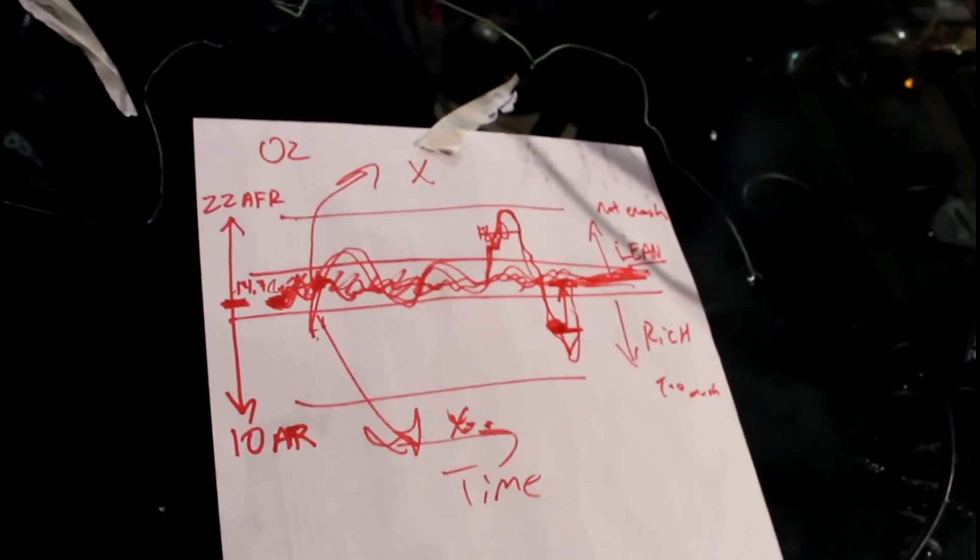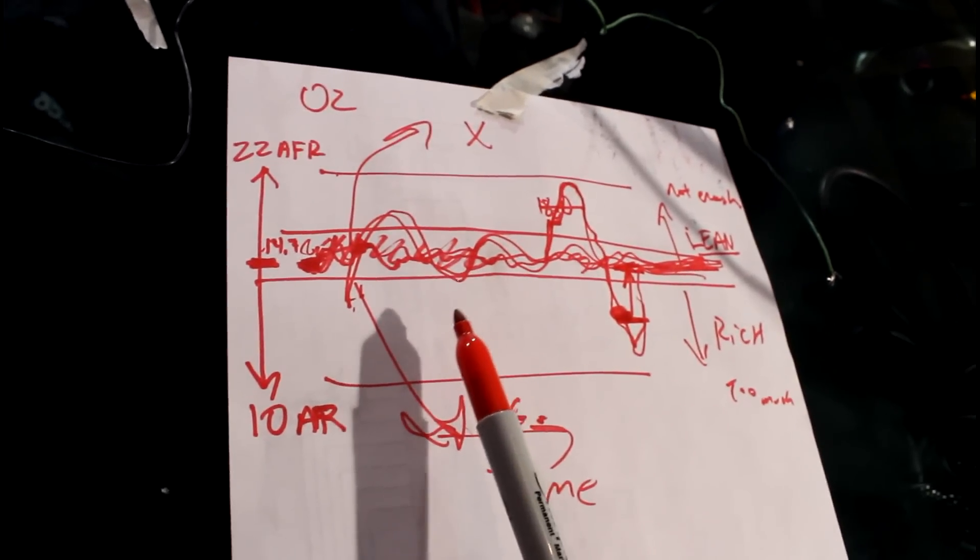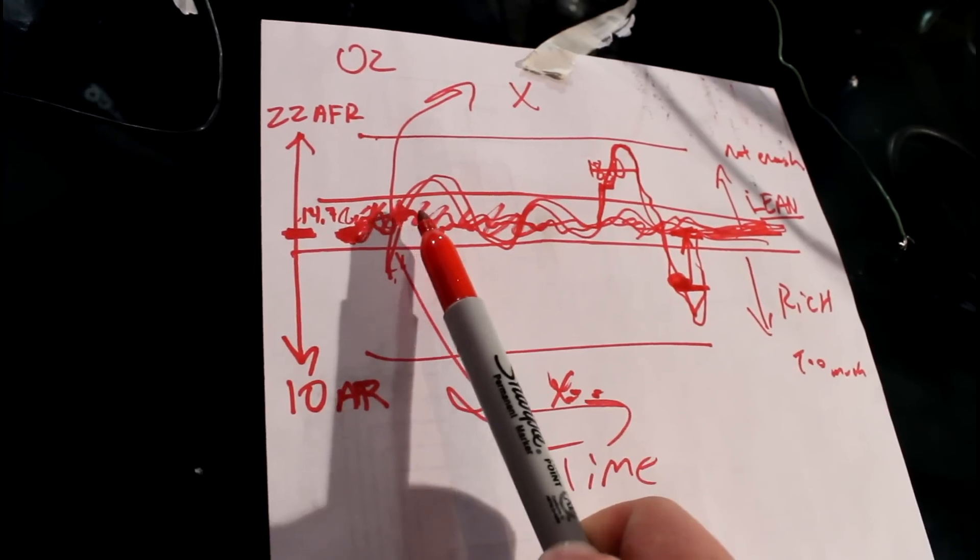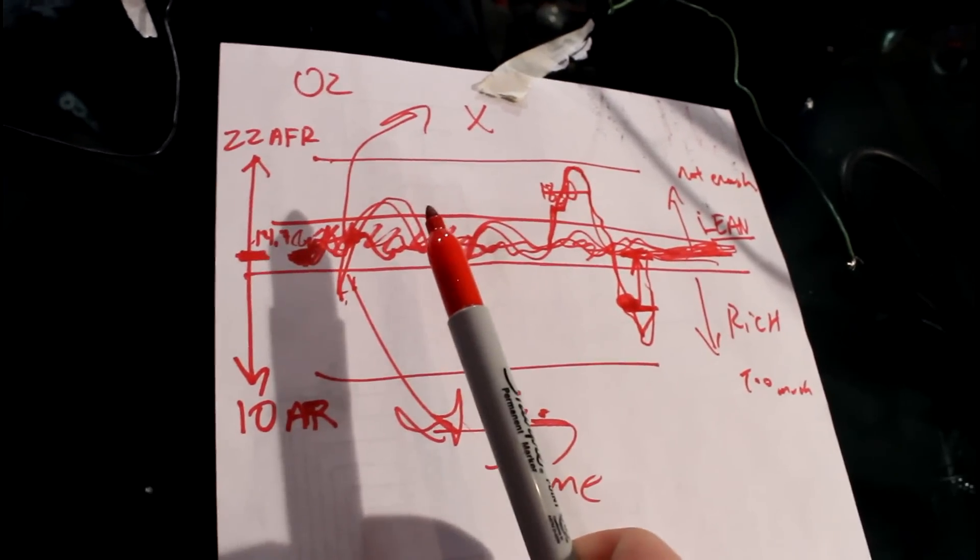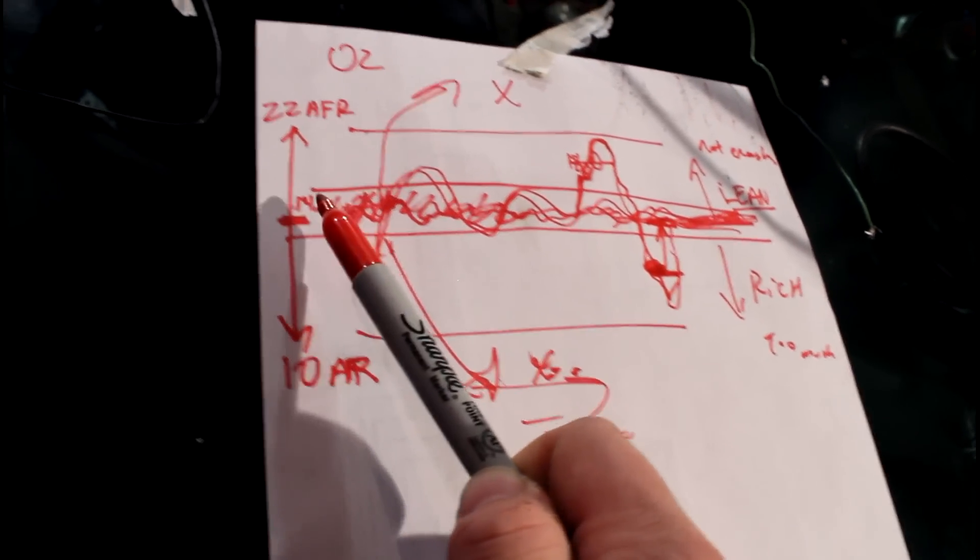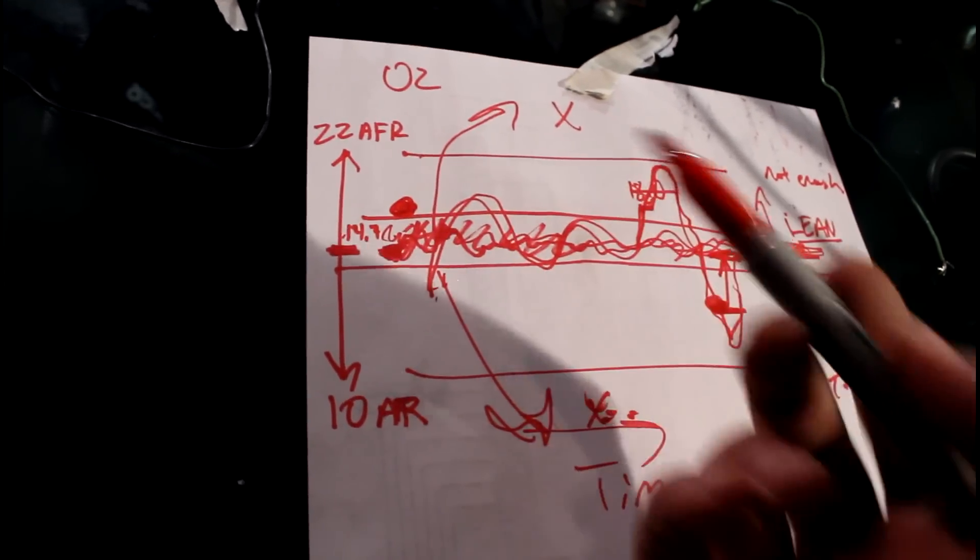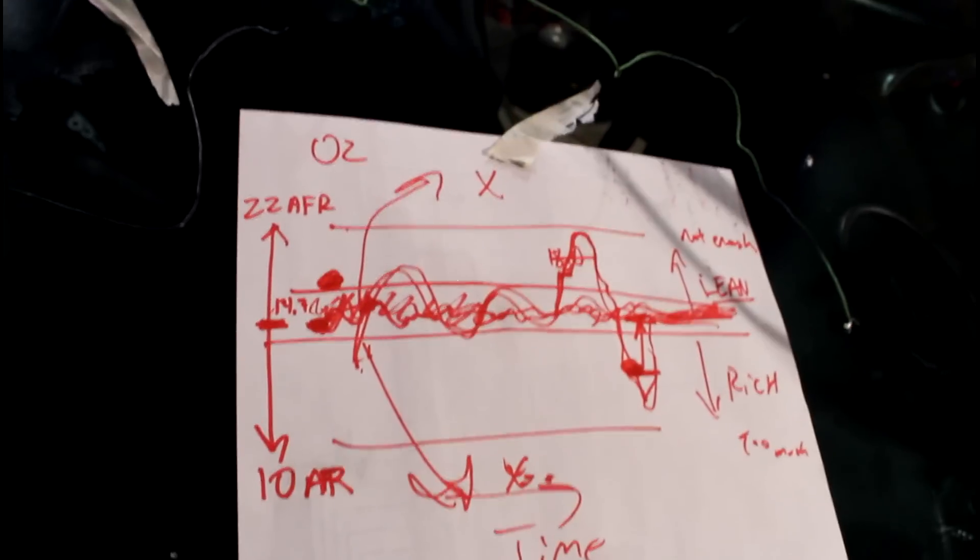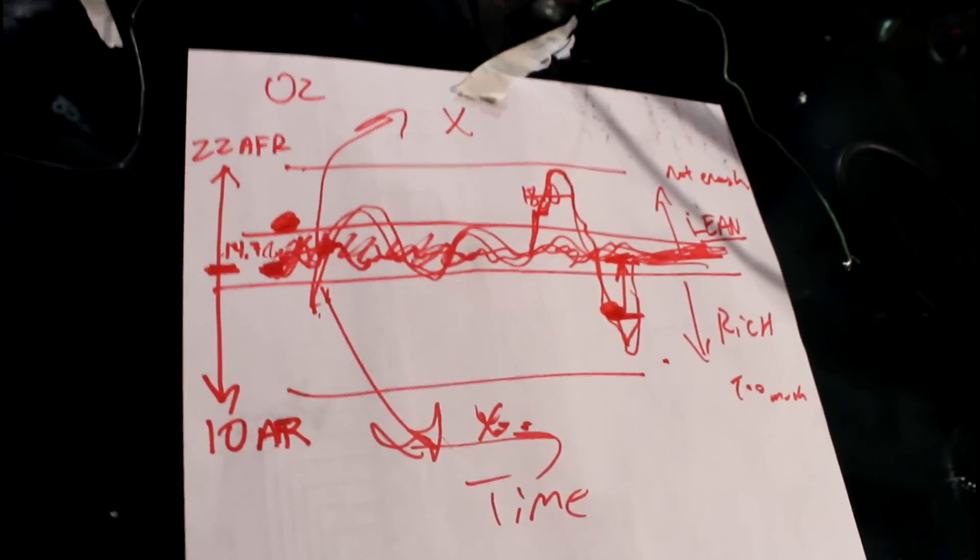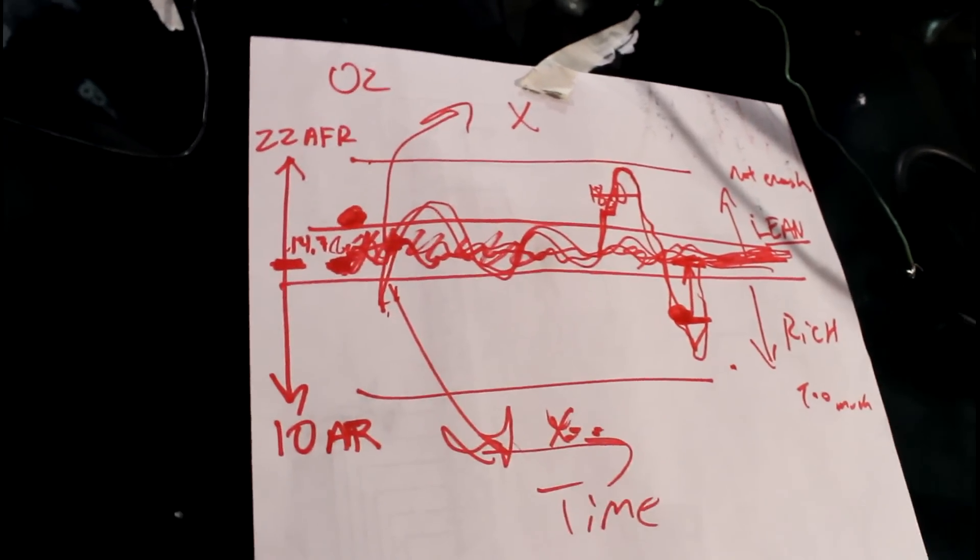So MegaSquirt will do target AFR tables. So you can tell it I want to be at 14.7 while I'm in my cruise range of the VE table. Or typically a lot of people in cruise would want to go a little bit leaner maybe, being 16 or something like that. So when you want to go into boost you need to be kind of rich. This is particularly important on a boosted motor because anything lean you're going to start detonating under boost.